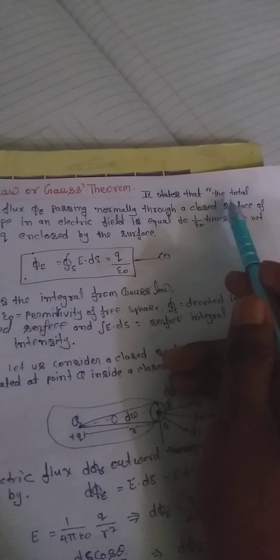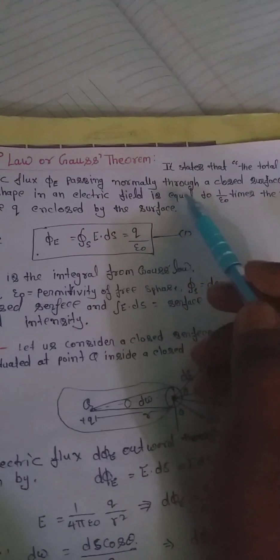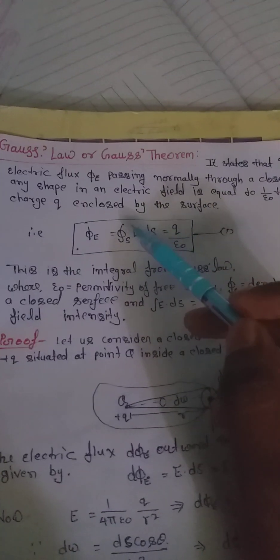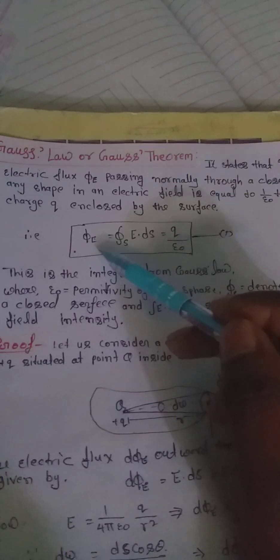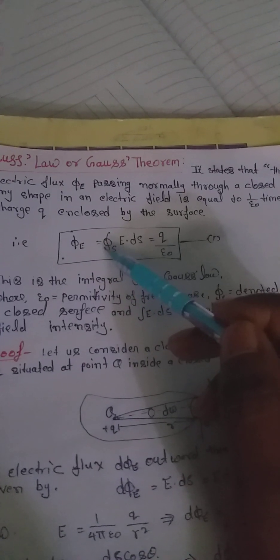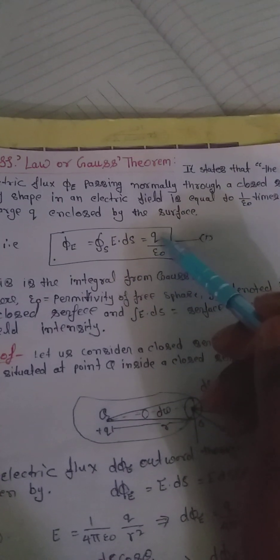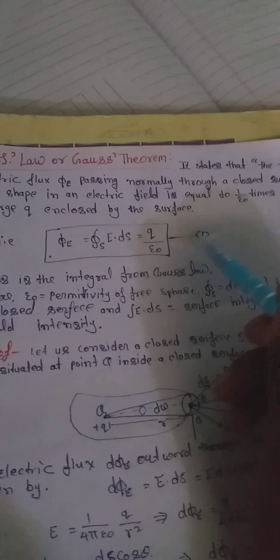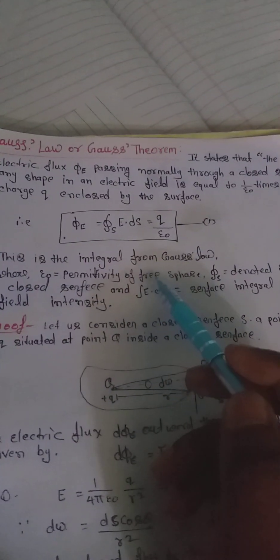Gauss's Law states that the total electric flux Φ_E passing normally throughout a closed surface of any shape in an electric field is equal to 1/εₒ times the net charge q enclosed by the surface. That is, Φ_E = ∮E·dS = q/εₒ. This is the integral form of Gauss's Law, where εₒ is the permittivity of free space.